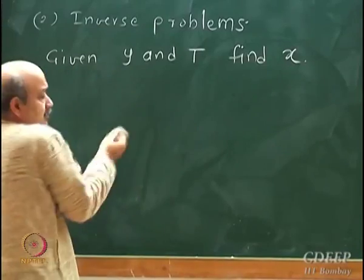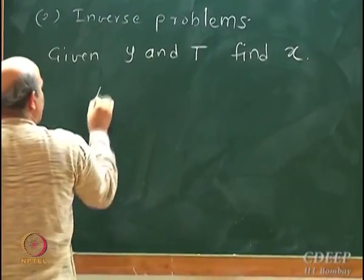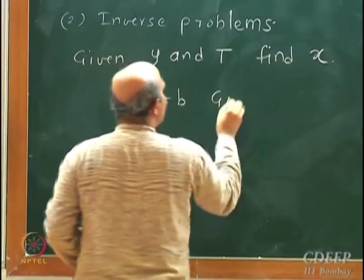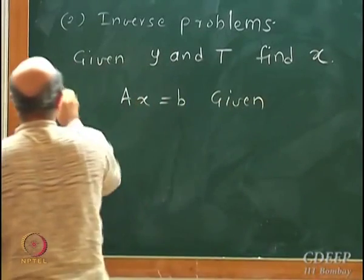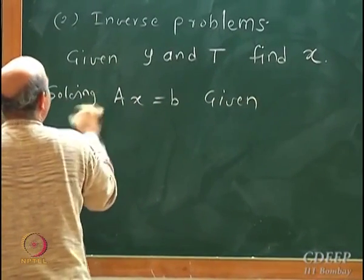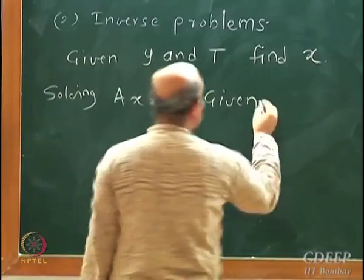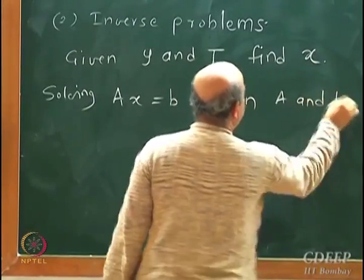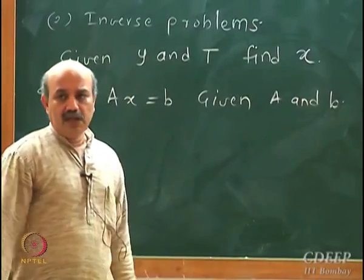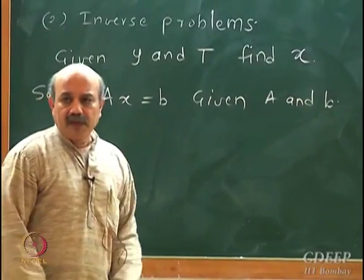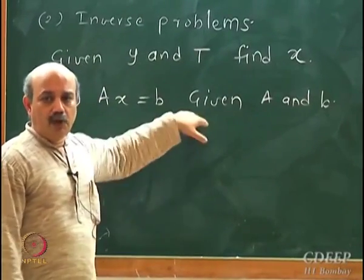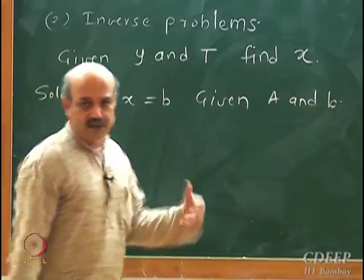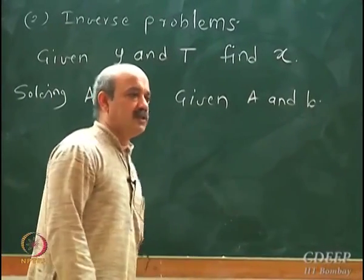So what falls under this? Solving Ax equal to B. Given A and B — the classical problem — given the right-hand side and the given operator, you want to find out x. This is probably the problem which you will solve most often in this course.